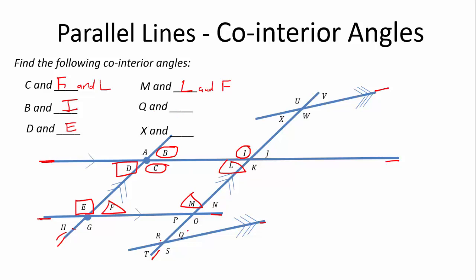Q is a co-interior angle. So, we have Q over here. What is the other co-interior angle? Now, remember, it can't be O. It can't be K because these are not parallel lines. This is not parallel with that. It's not parallel with that. It's only parallel with that.